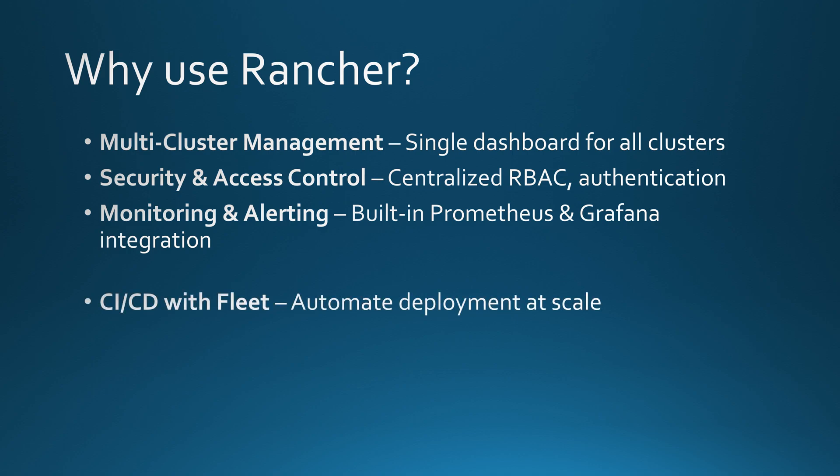Manually deploying and updating applications across Kubernetes clusters is slow and prone to errors. That's why Rancher comes with Fleet — its built-in GitOps-powered continuous deployment system. With Fleet, you can define how applications should be deployed across multiple clusters, and any changes you push to a Git repository automatically get deployed. This means faster rollouts, fewer human errors, and total automation.